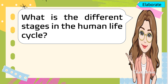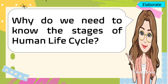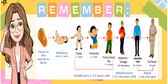Based on our discussion, what are the different stages in the human life cycle? Why do we need to know the stages of the human life cycle? To sum up, please remember the following: the first stage is the fetus in the womb to birth. The second is the infancy stage, from birth to one year. The third is childhood, from one year old to 12 years old.